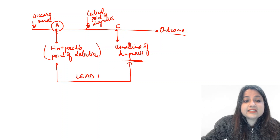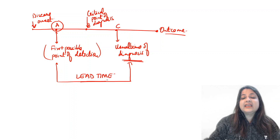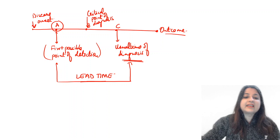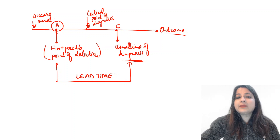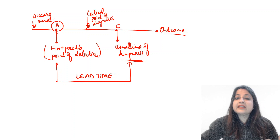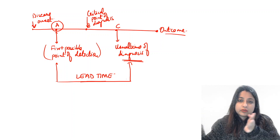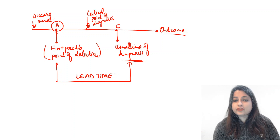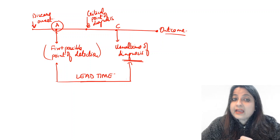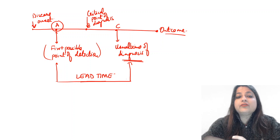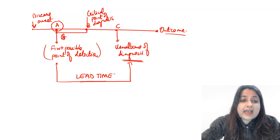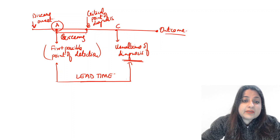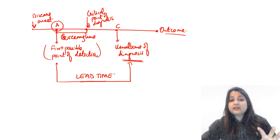The time when we can detect a disease at point A instead of point C — the interval between point A and point C — is the lead time. We are leading in early detection by that time interval. Instead of diagnosing at C, I diagnose at A, which allows me to either prolong survival or help cure the disease. The interval between point A and B is known as the screening time.